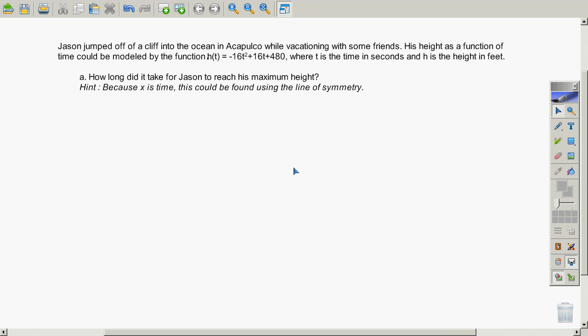Okay, so the hint for this one says to use, maybe we could use the line of symmetry stuff that we learned yesterday. So using the line of symmetry stuff, we know the line of symmetry is negative b over 2a. And when we look at this function right here, we know that a is negative 16, b is 16, and c is 480.